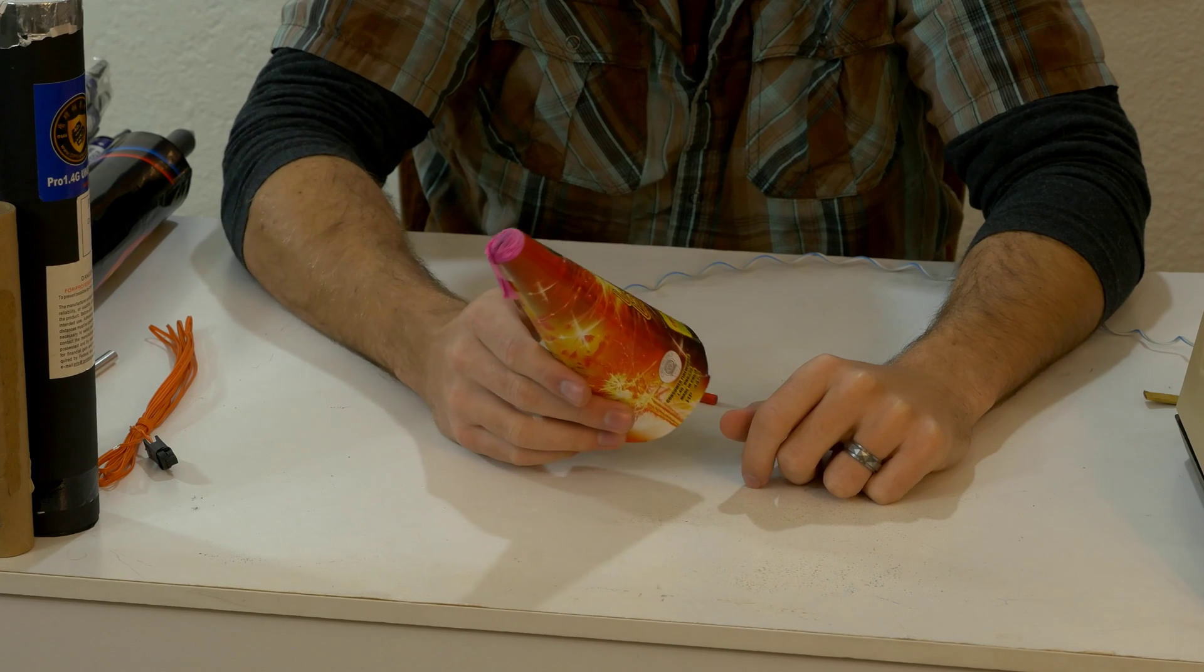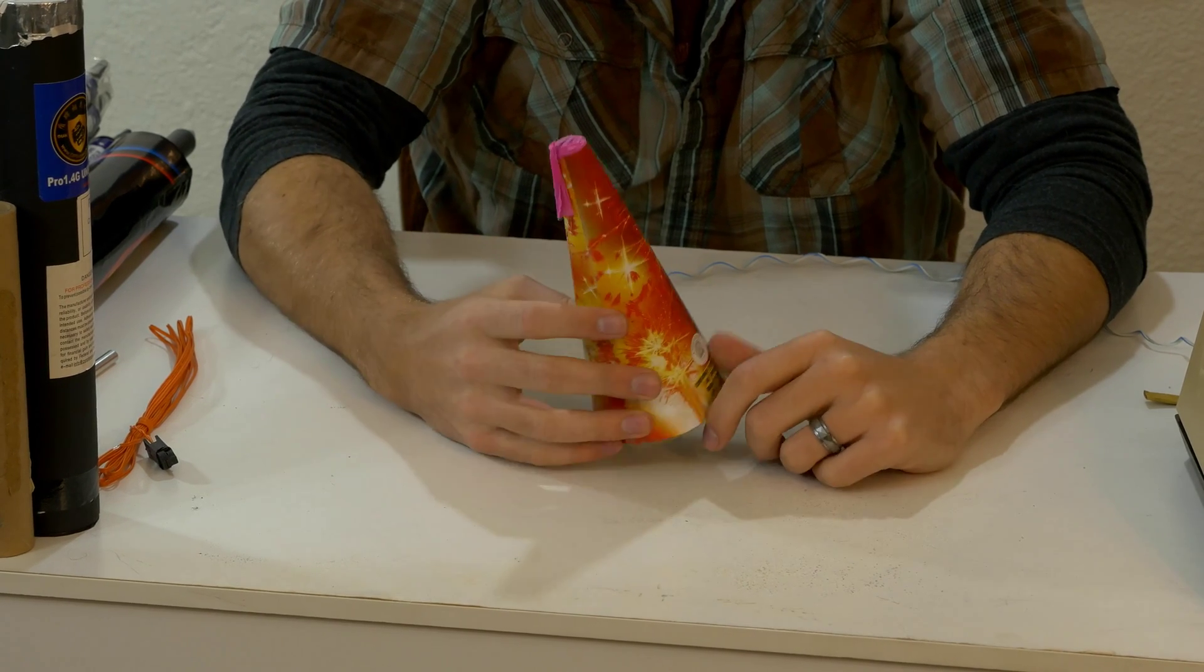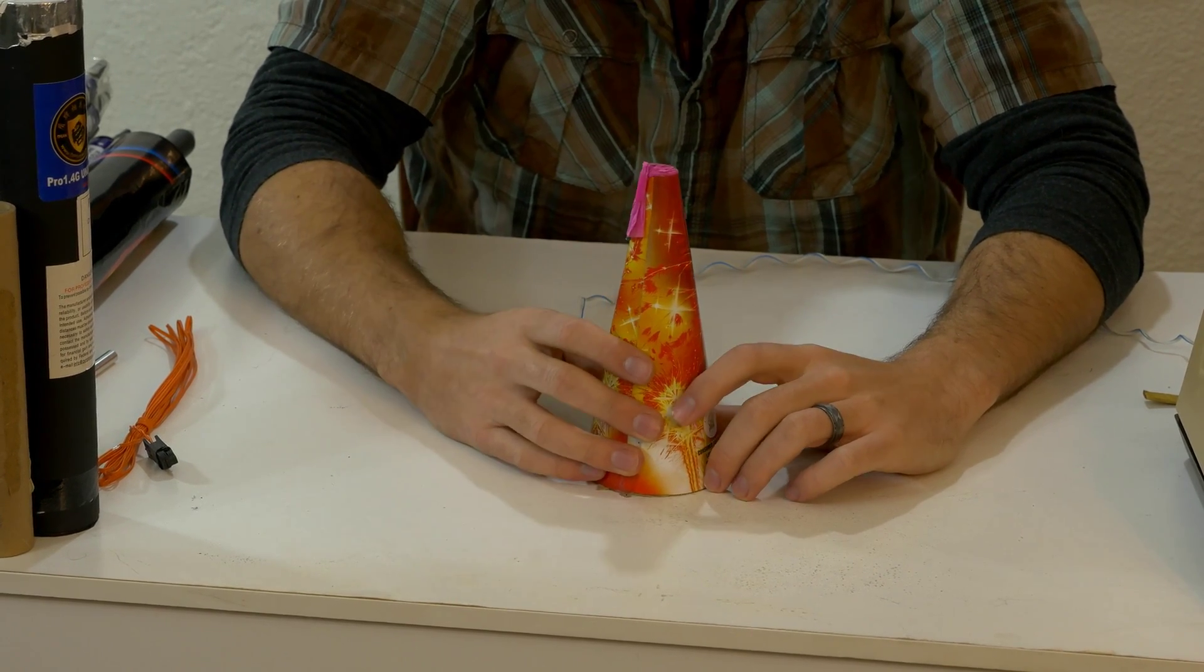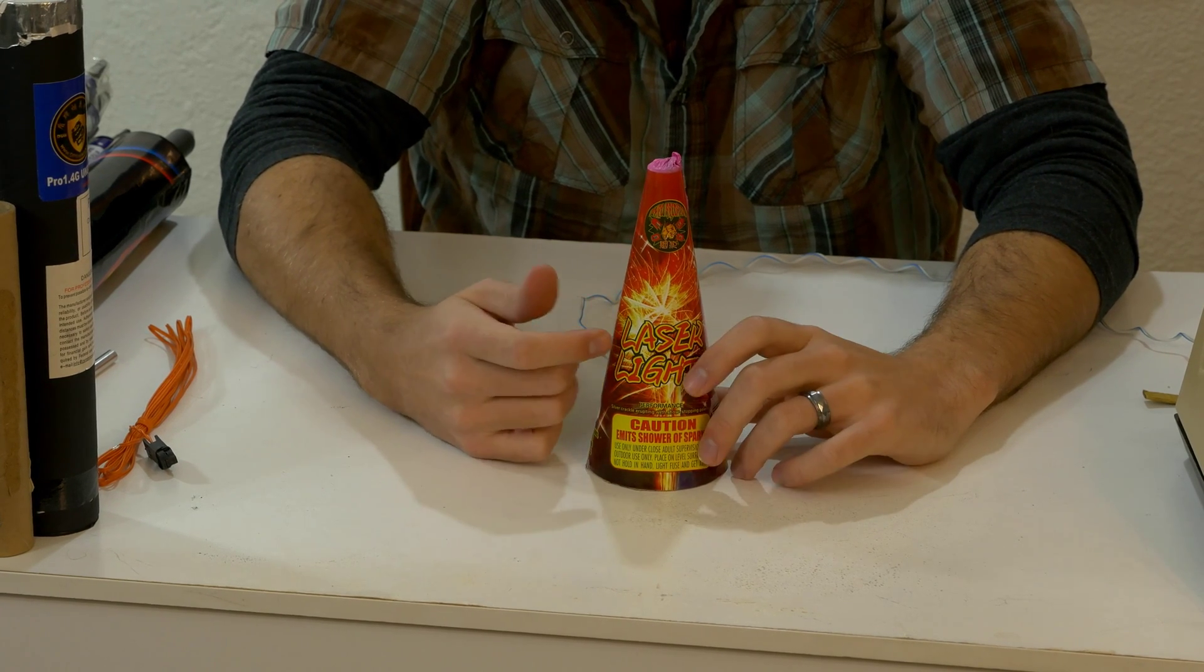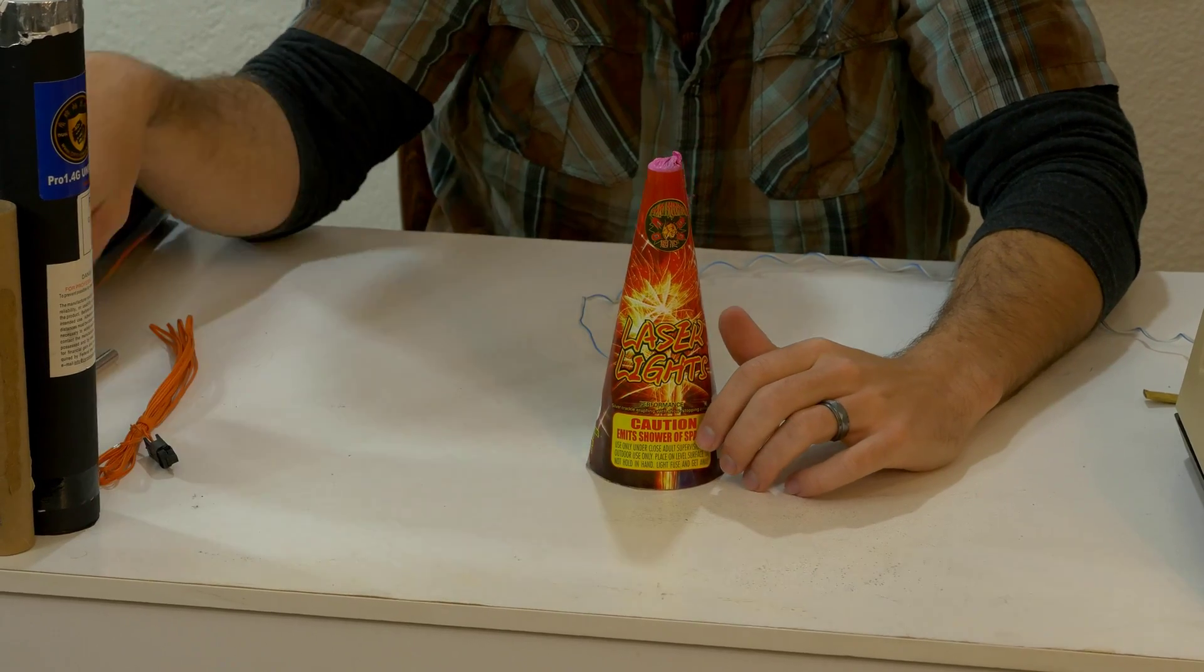Alright, we're going to continue on with how to fuse up fountains. This will be a pretty easy one. You're going to start seeing some recurring themes here on how to fuse things. There's really a couple of different ways to do things in general, and you're applying them to a lot of different types of items.